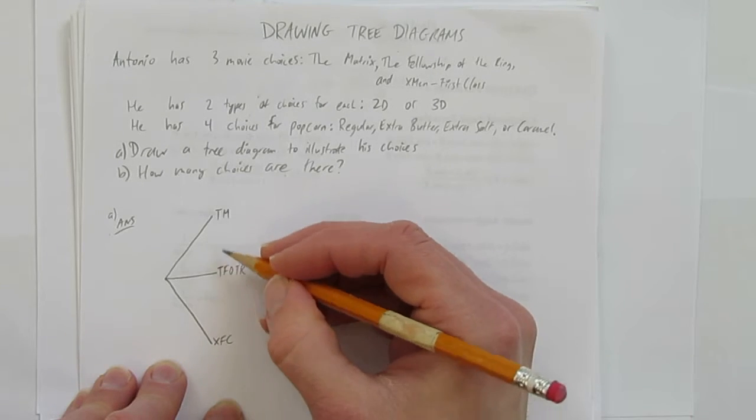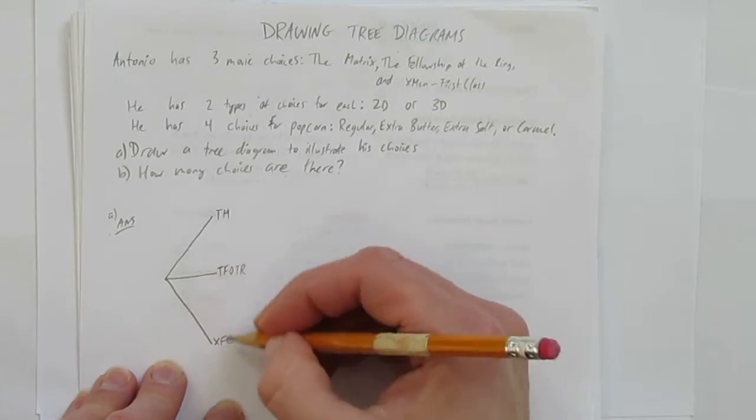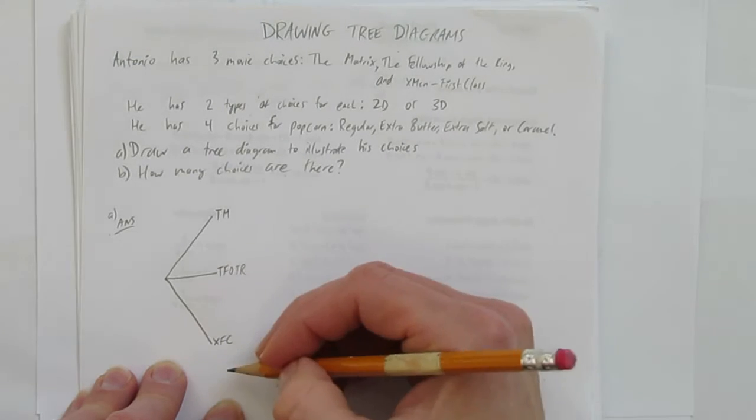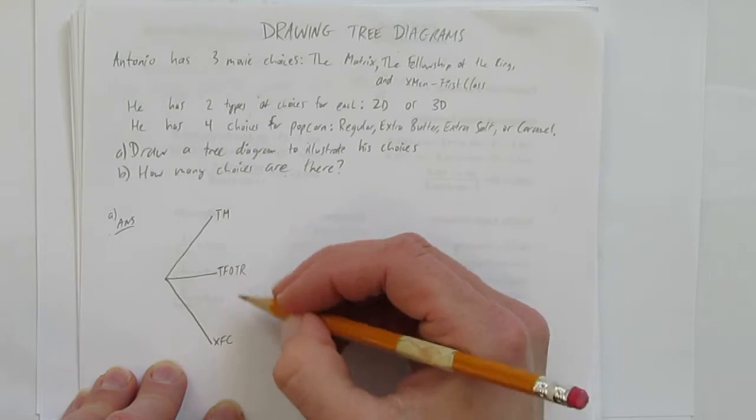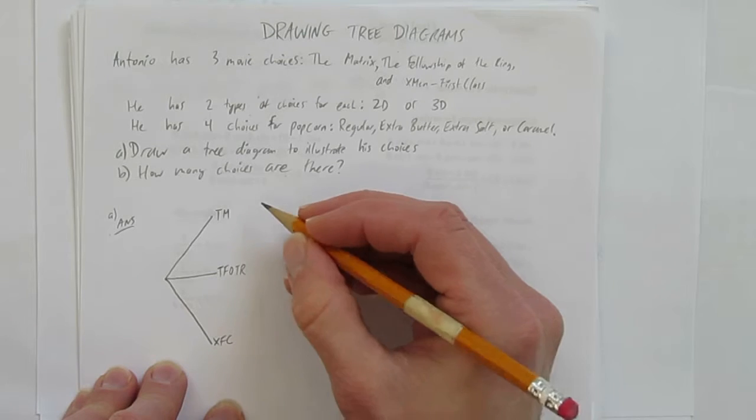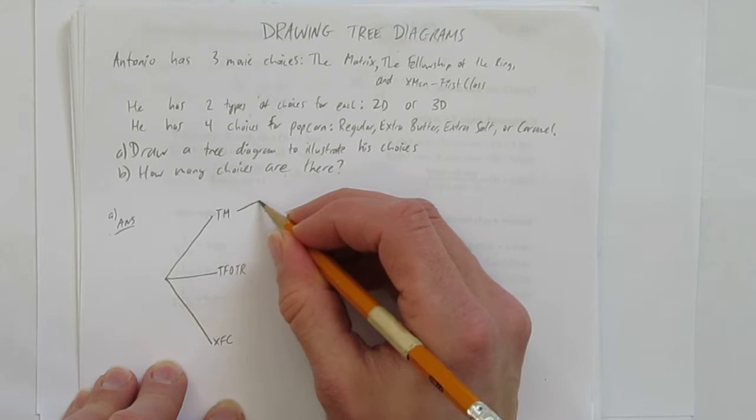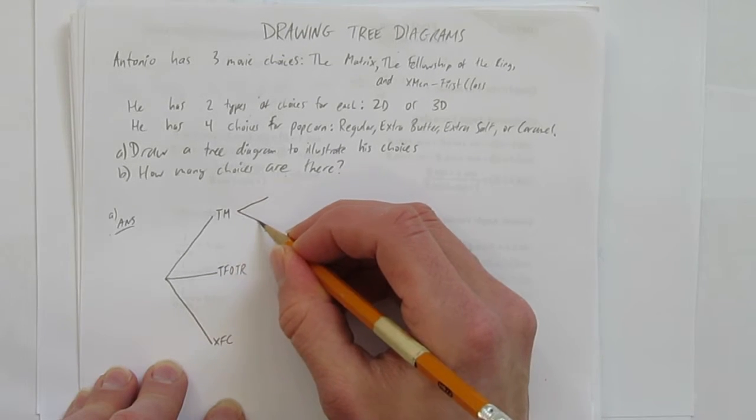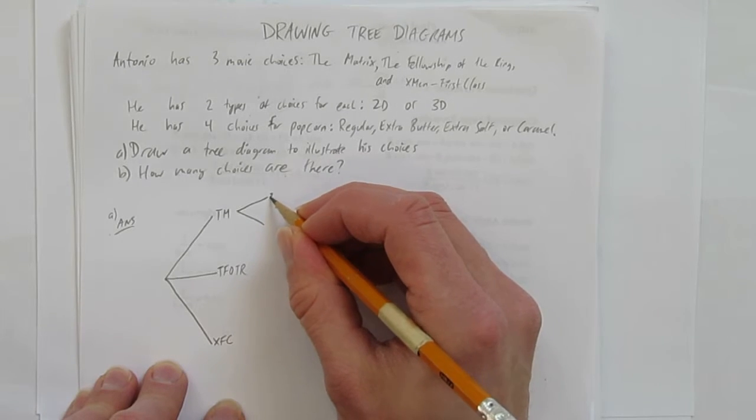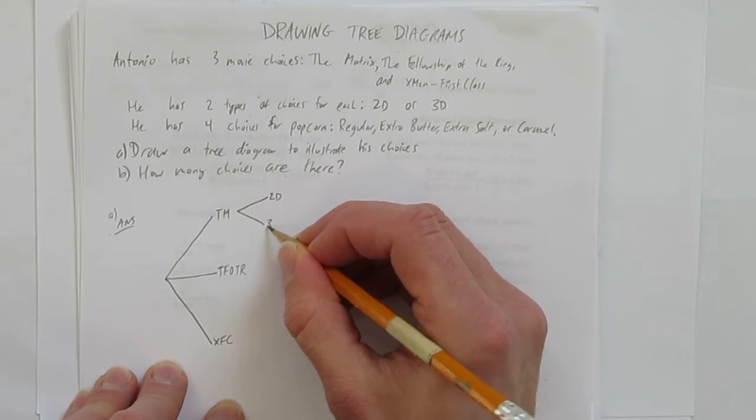Notice, they don't have to be perfectly lined up, but they should be more or less lined up. This column is the first choice. And for each of those choices, whichever movie he picks, he gets two choices of what kind of movie he sees. Either it's a 2D movie or it's a 3D movie.